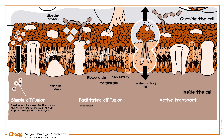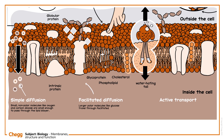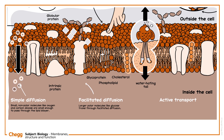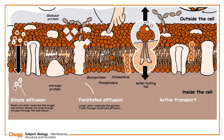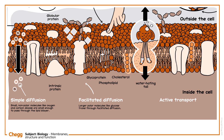Large polar molecules, like glucose, travel through facilitated diffusion. They are too large and charged to diffuse between the non-polar region of the phospholipid membrane, but with the help of transport proteins embedded in the membrane, they can.